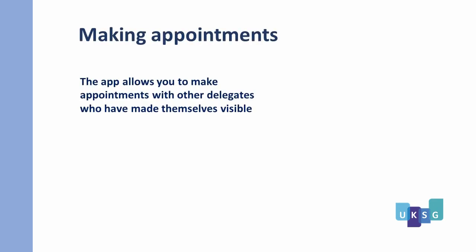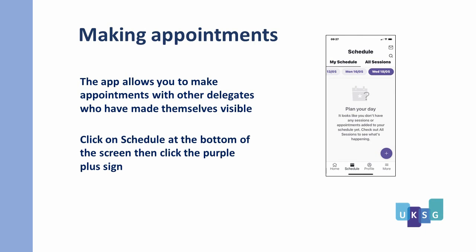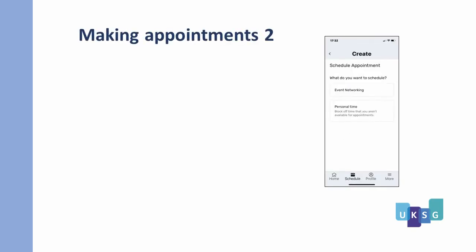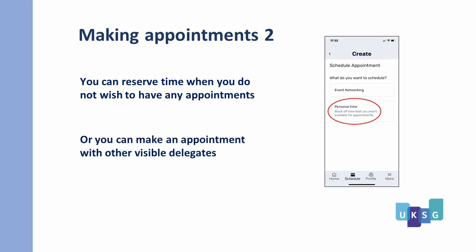Making Appointments: the app allows you to make appointments with other delegates who have made themselves visible. Click on Schedule at the bottom of the screen and then click the purple plus sign. You can reserve time when you do not wish to have any appointments, or you can make an appointment with any other visible delegate.